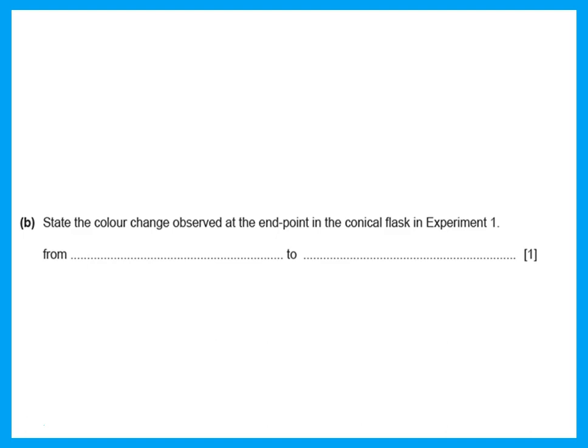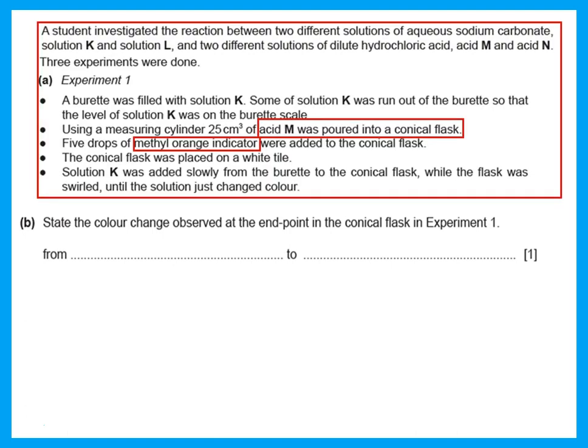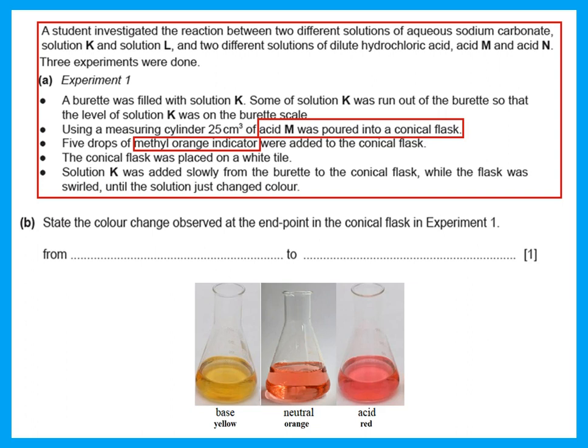State the color change observed at the end point in the conical flask. Methyl orange was added to acid in the flask, so we start with red. We add until the solution is neutral, and methyl orange is orange when neutral. So the methyl orange changes from red to orange.